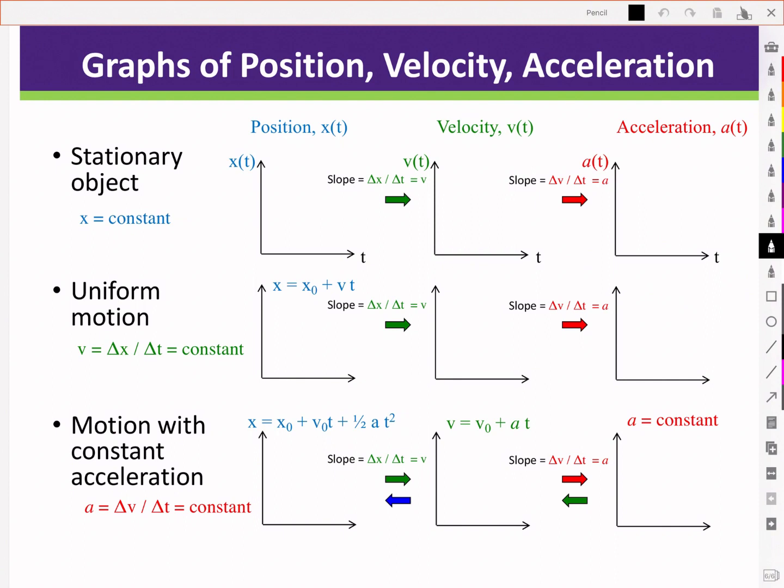To get us started, the first row is for a stationary object. Stationary means that the position is constant or unchanging in value. The slope of this position time graph is zero, corresponding to our velocity being zero. And the slope of the velocity time, also being zero, indicates an acceleration of zero.